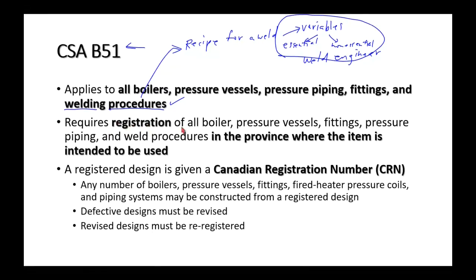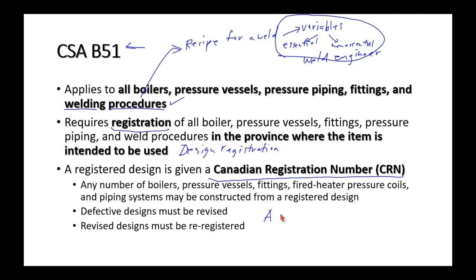CSA B51 says that boilers, pressure vessels, and pressure piping must all be registered designs. Every boiler and pressure vessel has a CRN — a Canadian Registration Number — for example, A1227.5123. These are basically catalog numbers unique to a particular design.